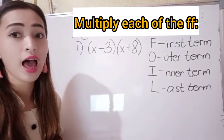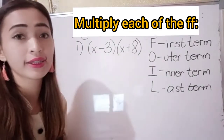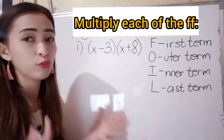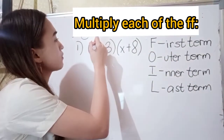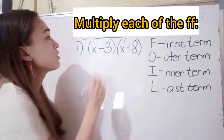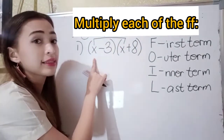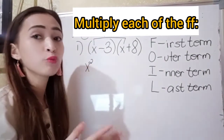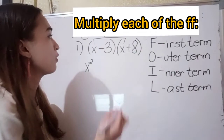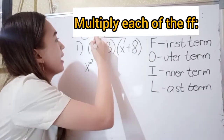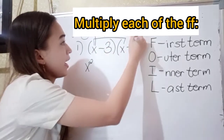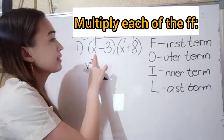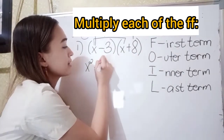So for number 1, we have x minus 3 times x plus 8. We're going to use the FOIL method. First, we multiply the first term: x times x is x squared. Next, we multiply the outer term: x times 8 is plus 8x.